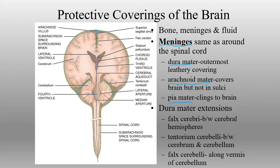The dura mater is a double layer of tissue. When it folds in on itself to get into the fissures, it becomes quite thick with extensions. We have the falx cerebri, running along the longitudinal fissure. We then have the tentorium cerebelli, which is a separation between the cerebellum and the cerebrum. And lastly, there's a falx cerebelli, which essentially separates the two hemispheres of the cerebellum.